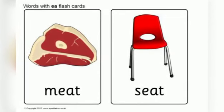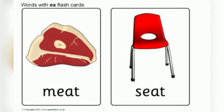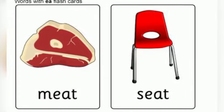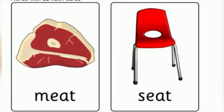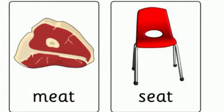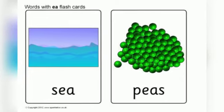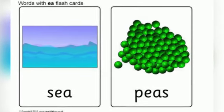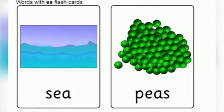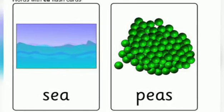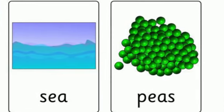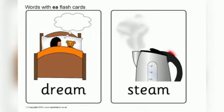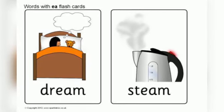M, E, A, T — meat. S, E, A, T — seat. Meat. Seat. S, E, A — sea. P, E, A, C, E — peace. Sea. Peace. D, R, E, A, M — dream.